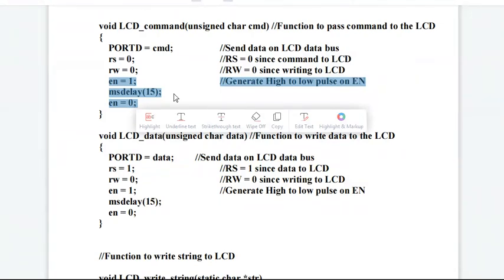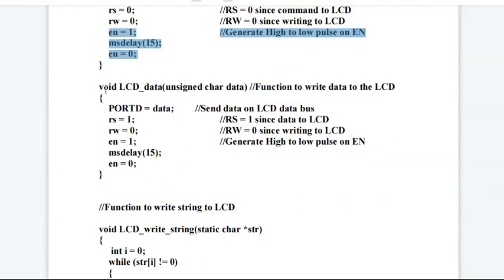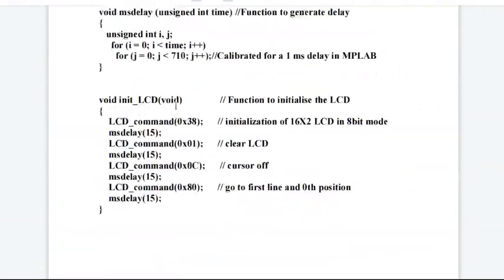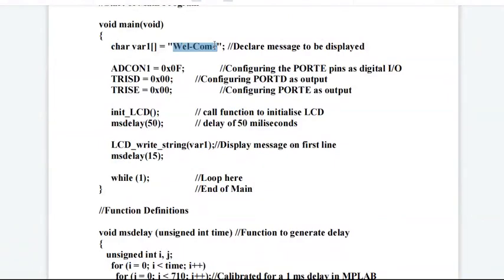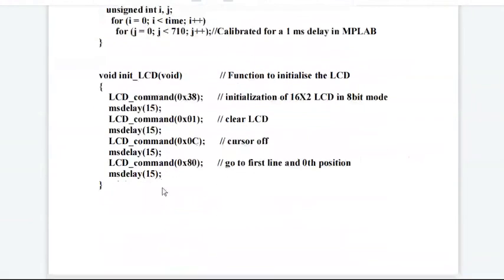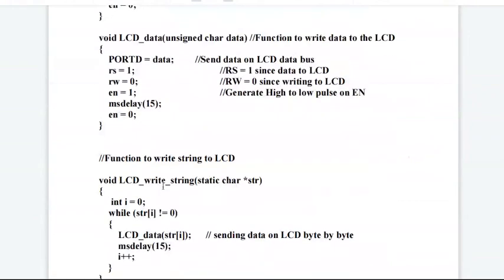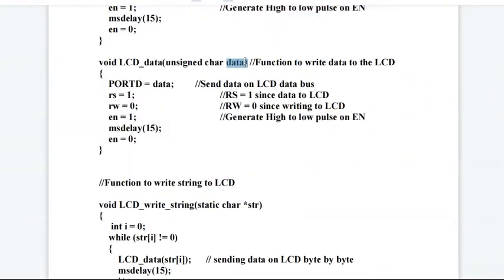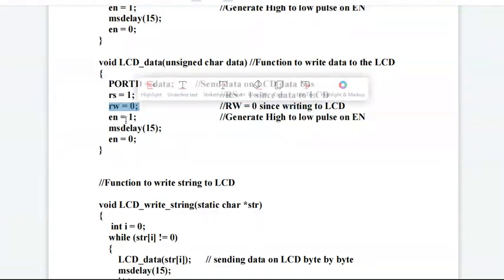In LCD_data function definition, you can see data is a variable of unsigned char. To this data we are sending the 'welcome' string of characters - that is our data. One by one the character will be received by this data variable and sent to port D. Now we know this is data, so we'll make RS equals to 1. Since data is sent to the LCD, we'll make read-write pin equals to 0, and then we'll generate the enable pulse.